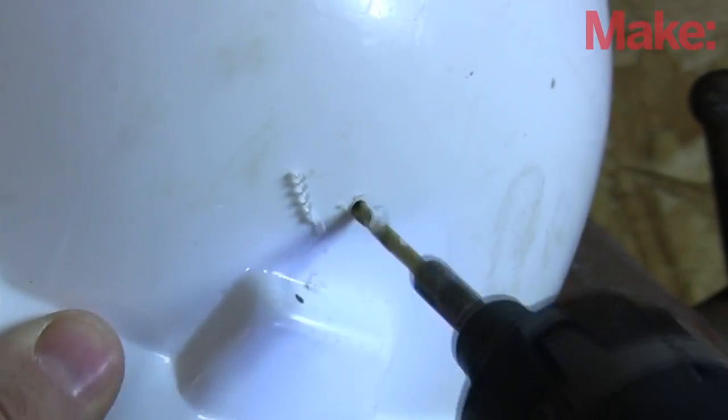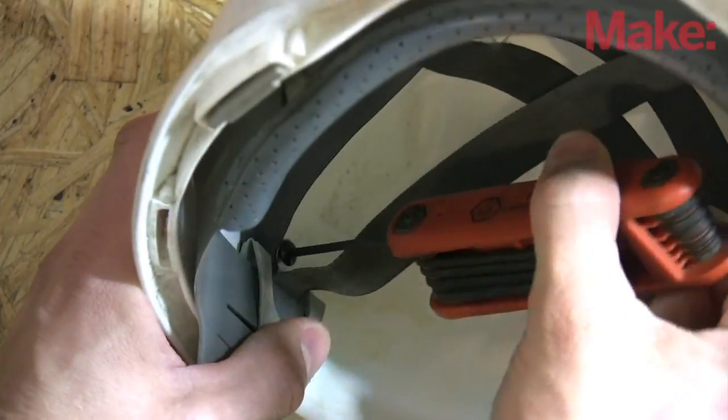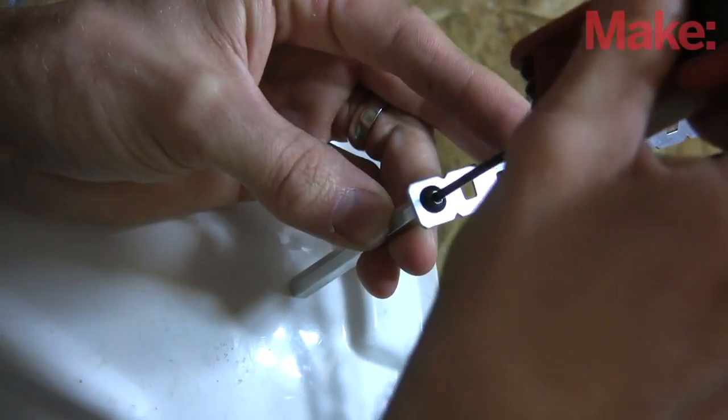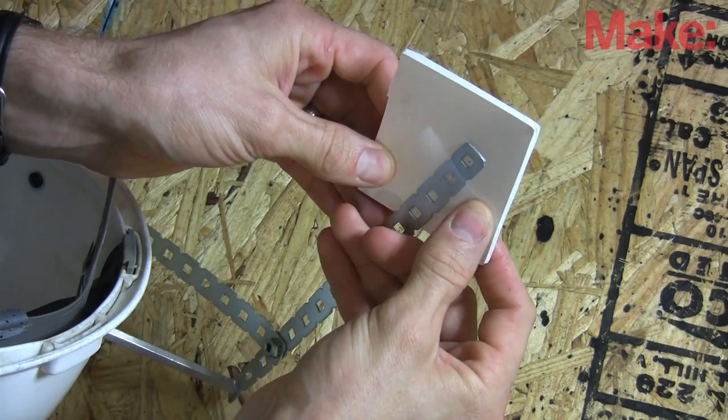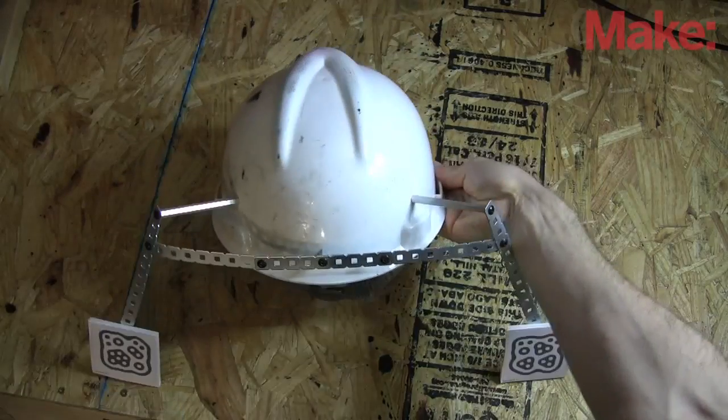I modified a construction helmet to hold a pair of fiducial markers so the computer would know the position and angle of my head. The markers could be positioned anywhere on the head, but putting them right on the cut line makes for less math and easier programming.